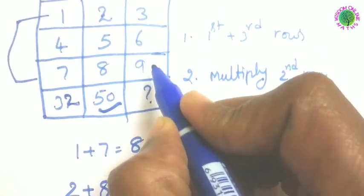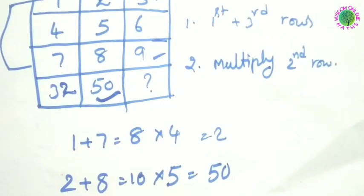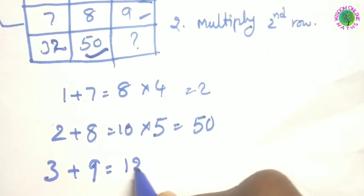Now we have to find 3, 6, 9 is there. So 1st and 3rd we have to add first. So 3 plus 9 we should add, 3 plus 9 is 12.